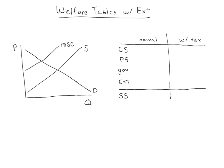Welcome to this short video where we're going to analyze a market that's subject to an externality using a welfare table. Normally we wouldn't do this — we'd just be focused on looking at our market and finding the market quantity, comparing it to the efficient quantity, and then seeing there's going to be some deadweight loss because the market's not efficient. We might be interested in quantifying that deadweight loss and thinking about corrective taxation.